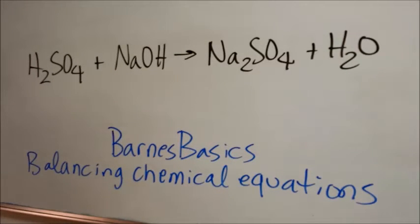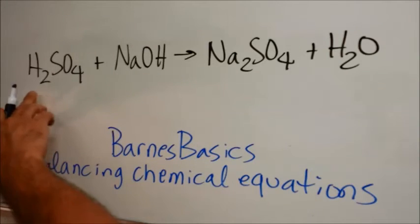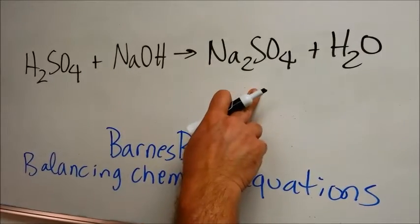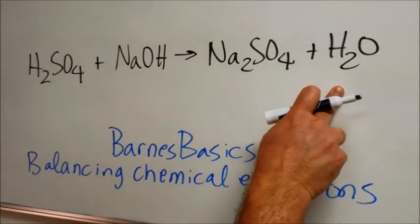In this first equation we're going to balance this formula. It says H2SO4 plus NaOH yields Na2SO4 plus H2O.